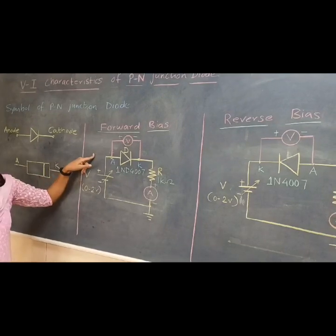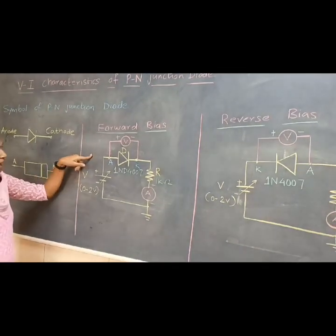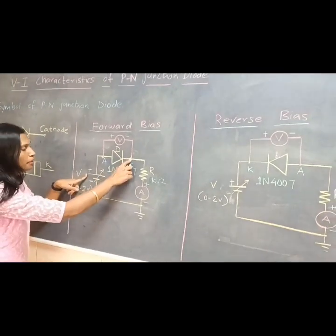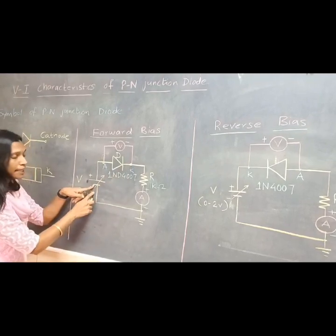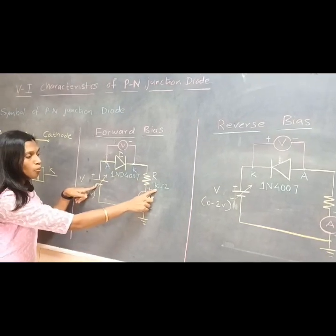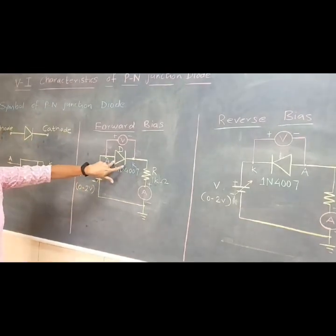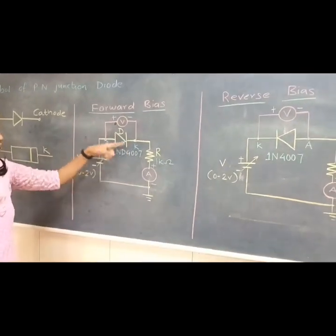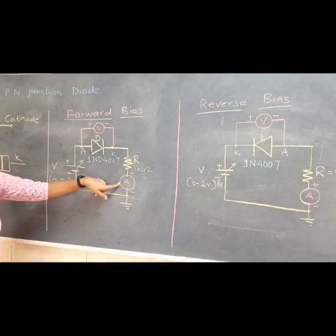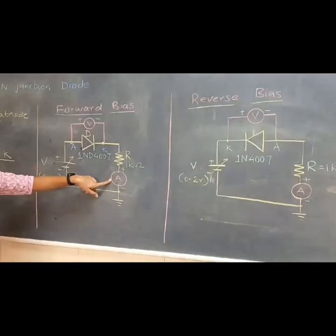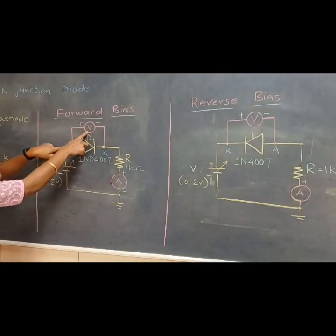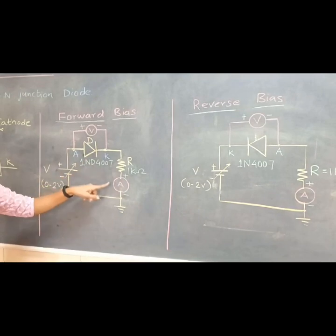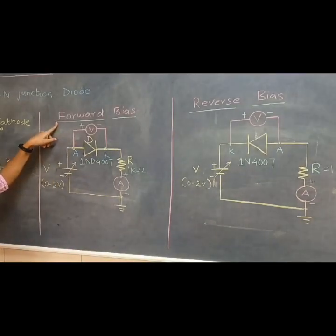Now first we will see the circuit for the forward bias. For forward bias, the anode terminal should be connected to the positive terminal of the battery, and the cathode terminal is connected to the negative terminal of the battery through a 1K ohm resistor. To measure voltage across the diode, we connect a voltmeter in parallel, and to measure current flowing through the circuit, we connect an ammeter in series with the diode.